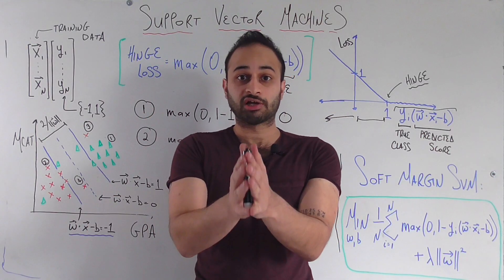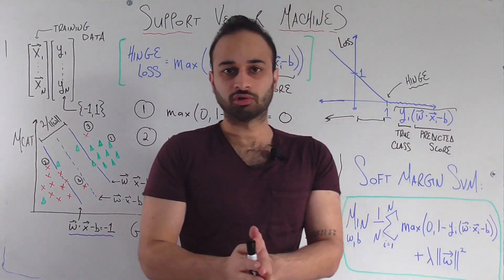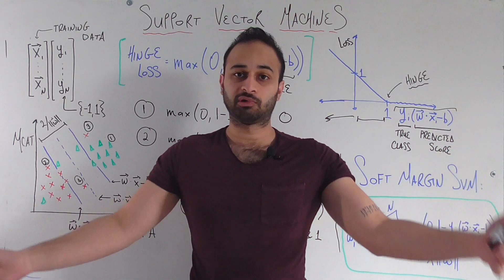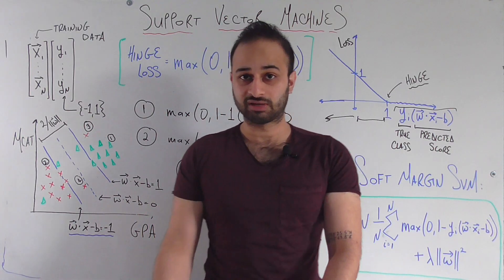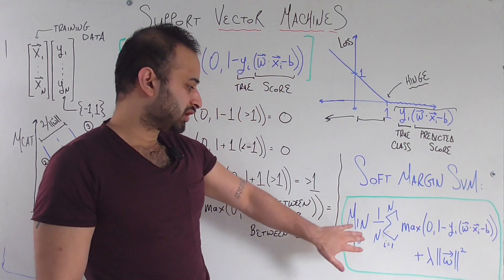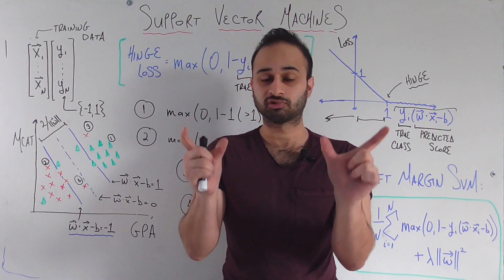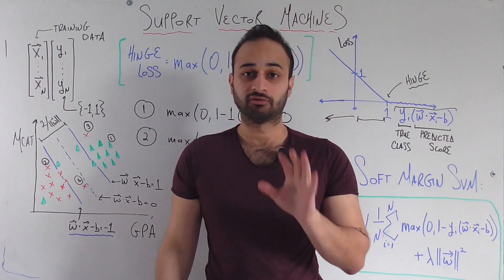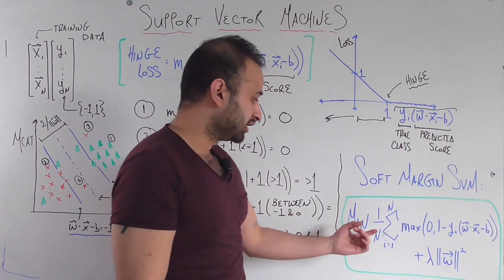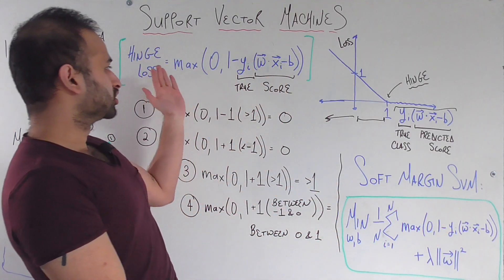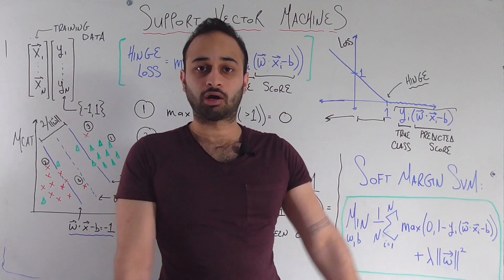That was the hardest part — building intuition for why hinge loss is crucial to soft margin SVM. Now, the mathematical formulation: soft margin SVM minimizes a sum of two terms. We choose weight vector w and intercept b to minimize the average hinge loss across the entire training set — summing the hinge loss from i = 1 to n and dividing by n. Of course, we want this average hinge loss to be as small as possible.